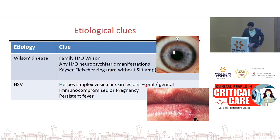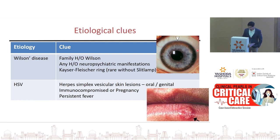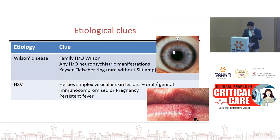Other rare causes of ALF: Wilson's disease — family history, history of neuropsychiatric manifestations, and rarely Kaiser-Fleischer ring visible on slit lamp examination. Herpes simplex is another rare etiology — in 30% of ALF cases due to HSV you can see vesicular lesions; it is seen in immunocompromised patients or pregnancy, and these patients often have persistent fever.